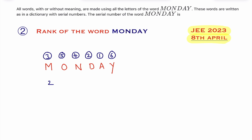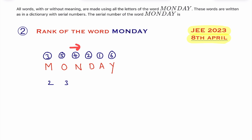Now come to O, which is 5. To the right side of 5, how many numbers are there which are smaller than 5? These three numbers are smaller than 5, so you write 3 here. Now to the right side of N, which is 4 — how many numbers are there which are smaller than 4? There are 2 numbers, so you write 2.